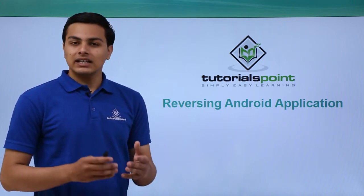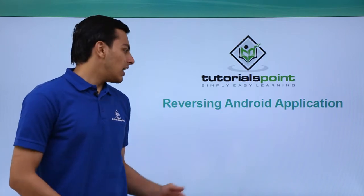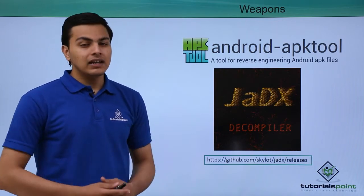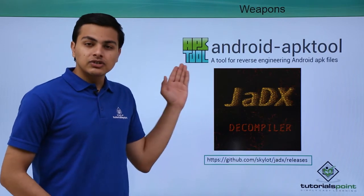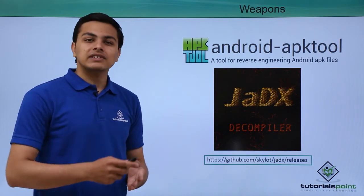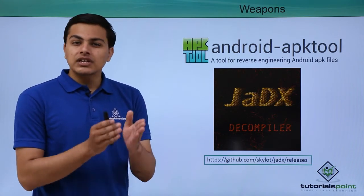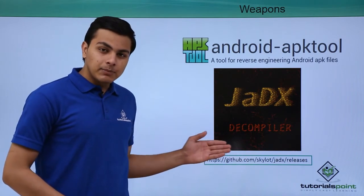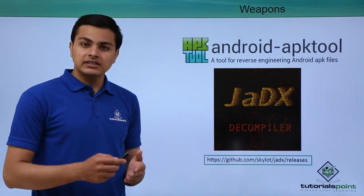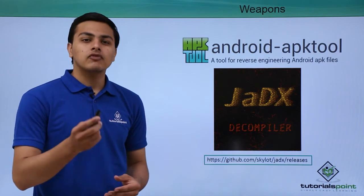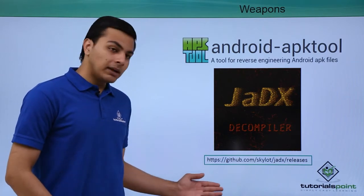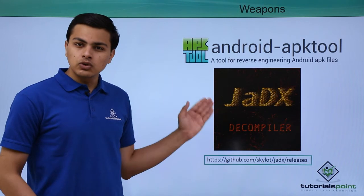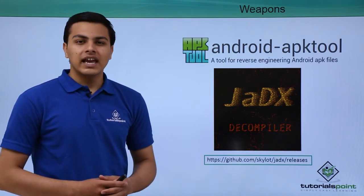In this video we'll talk about how we can reverse or decompile our Android application. There are lots of tools we can use. The first tool is APK Tool, which is present inside our Kali Linux operating system. The second tool is JADX decompiler, which you can download from its official GitHub repository at github.com/skylot/jadx/releases. We will use these two tools throughout the course to decompile or reverse any Android application.